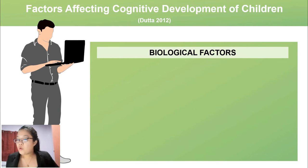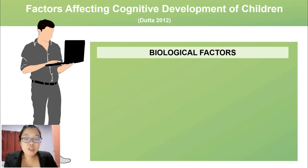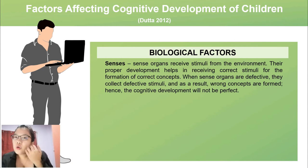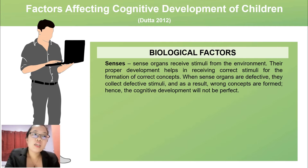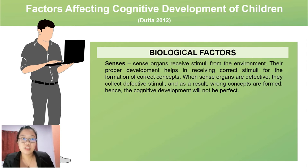Biological factors are substances that affect biological systems and are necessary to produce a result or cause an activity in the body. The first biological factor is the senses. Sense organs receive stimuli from the environment; their proper development helps in receiving correct stimuli for the formation of correct concepts. When sense organs are defective, they collect defective stimuli and, as a result, wrong concepts are formed.